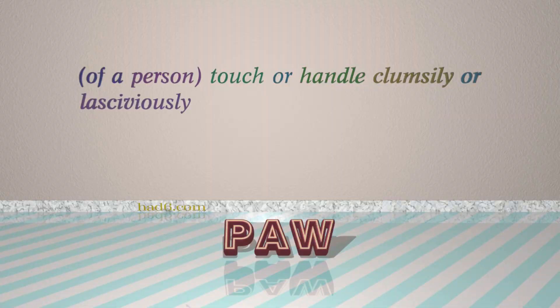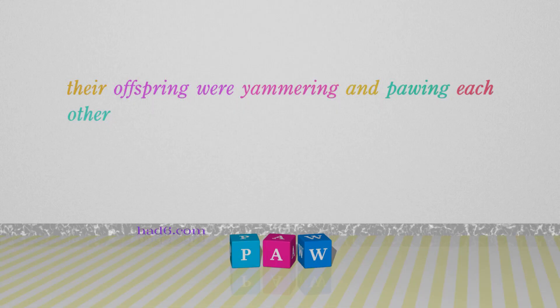Number 6: Paw, which means of a person, touch or handle clumsily or lasciviously. For example: Their offspring were yammering and pawing each other.